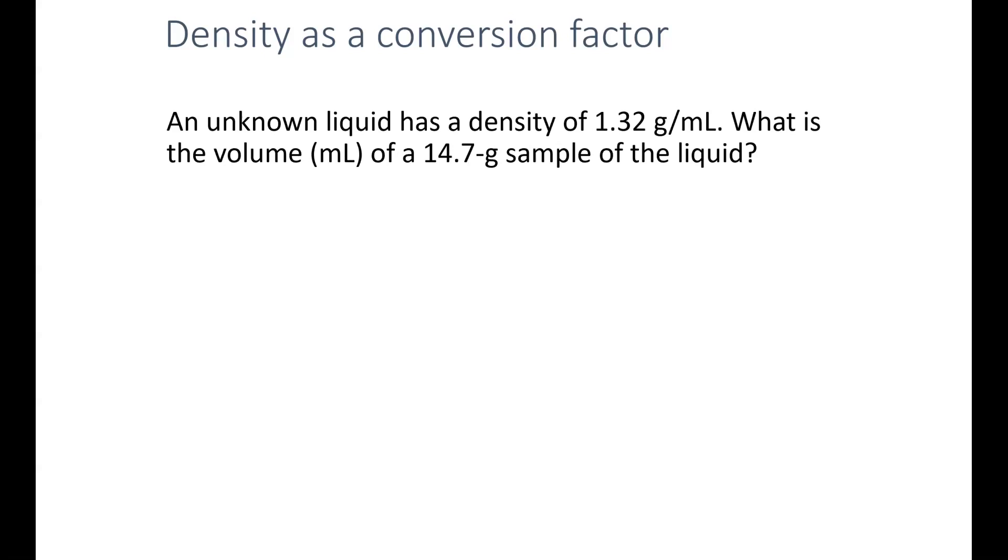So I can use this density of 1.32 grams per milliliter to help me find what the volume is in milliliters of this sample. So to do this, I need to determine what equalities I can find in here and use those as conversion factors. Now you may think there's no equalities going on in here, but we can actually turn density into equalities and into a conversion factor because 1.32 grams per milliliter means that for every 1.32 grams of my liquid, I'm going to have exactly 1 milliliter of that liquid.